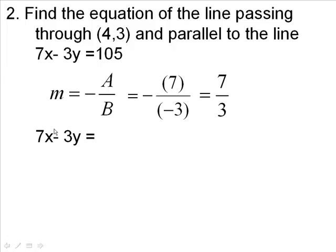We're going to put a 4 in here for the x, and a 3 in there for the y. So let's do that. 4 for x, 3 for y, you're going to have 28 minus 9. 7 times 4 is 28, 3 times 3 is 9. Subtract those, you're going to get 19.